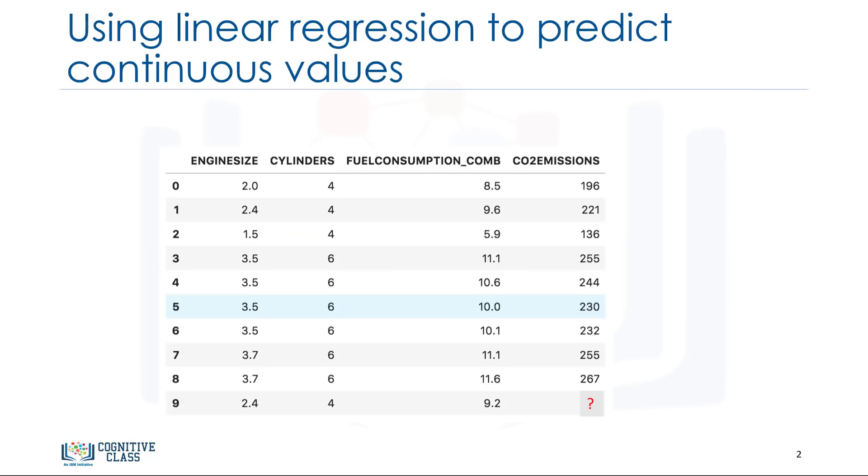Let's take a look at this data set. It's related to the CO2 emission of different cars. It includes engine size, cylinders, fuel consumption, and CO2 emissions for various car models. The question is, given this data set, can we predict the CO2 emission of a car using another field such as engine size? Quite simply, yes.